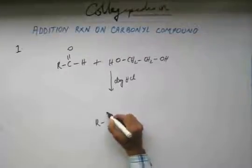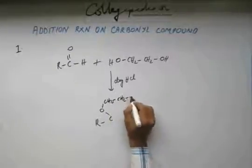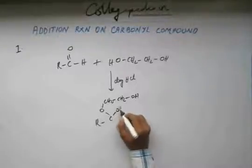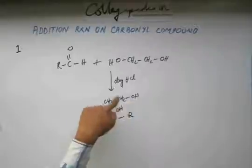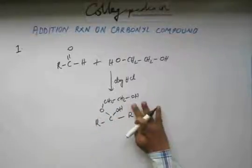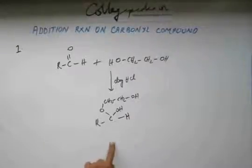So what we will get is this oxygen. This is the hemiacetal that we formed. We had one alcohol added—one OH group and two R groups. If we have taken aldehyde, here it will be hydrogen. This is a hemiacetal.